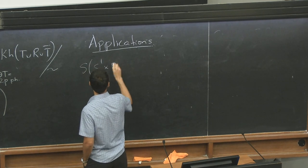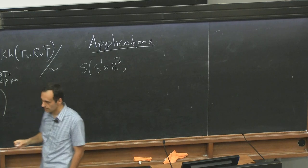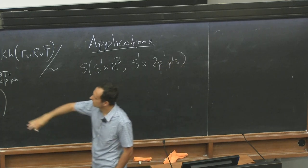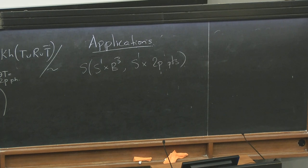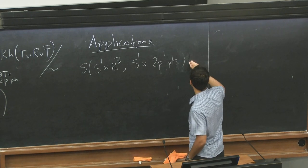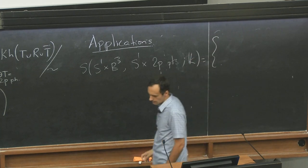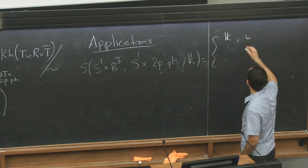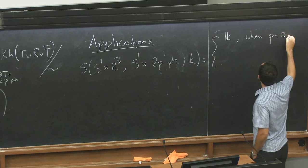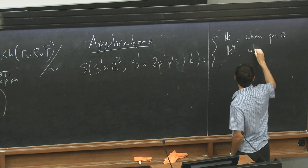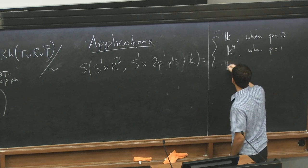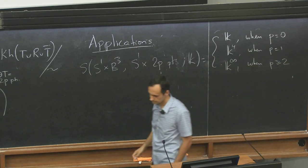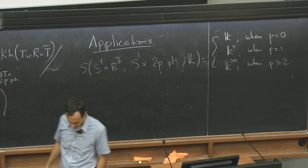We can do some computations. For example, S of S1 times B3. So let's just look at one handles and the simplest thing I can think of is S1 times two points. So just two circles going around. Okay. I have to work with the coefficients in a field for some technical reasons. Well, this turns out to be K. So I have, yeah. So this involves some calculation of Hochschild homology. It's K when P equals zero. It's dimension four when P equals one. And it's infinite dimensional when P is greater or equal than two.